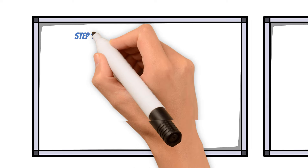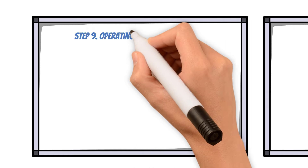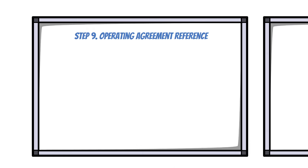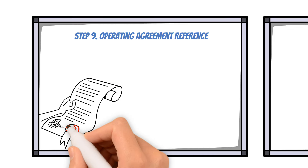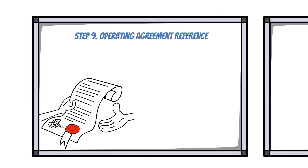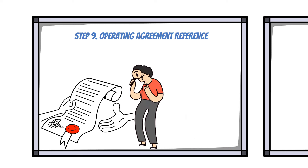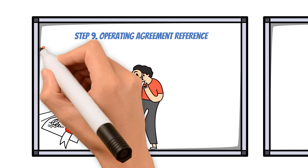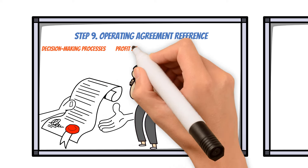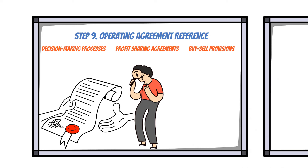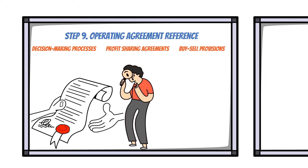Step 9: Operating Agreement Reference. Consider referencing an operating agreement within your articles, if you plan to have one separately detailing internal affairs like decision-making processes, profit-sharing agreements, buy-sell provisions, etc.